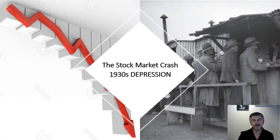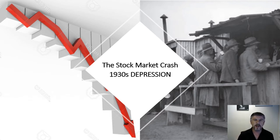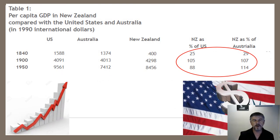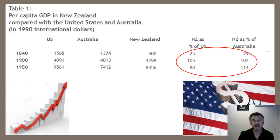New Zealand was going from strength to strength in productivity, but then we had the stock market crash of the 1930s, caused mainly by price instability. It wasn't until 1934 that New Zealand established its own Reserve Bank, with its primary purpose being to provide stability in the general level of prices. Before then, monetary policy was decided in the UK, and the New Zealand pound was issued by independent private banks. Moving forward to the 1950s, New Zealand's income per capita was about 88% of the US, with tough import controls giving local manufacturers the ability to compete against much higher priced imports.